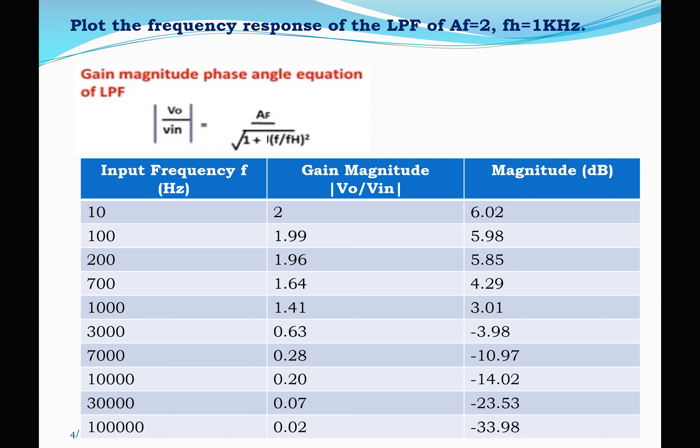For 100 Hz: 100 / (1 × 10³) = 0.1. Then 0.1² = 0.01, plus 1 = 1.01. Square root is 1.0049. So 2 / 1.0049 ≈ 1.99, giving 5.98 dB. Similarly, you calculate all frequency values, find their gain magnitude, and convert to dB to fill in the tabular column. Using this table, you plot the frequency response of the filter.